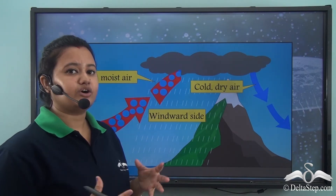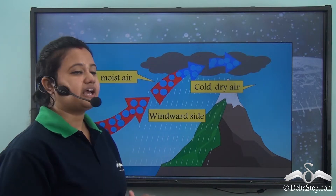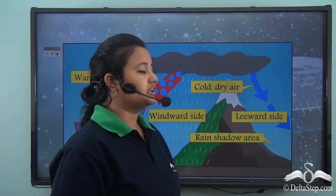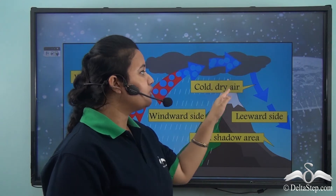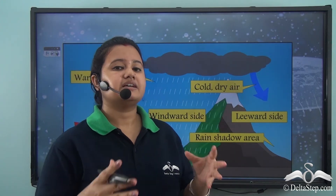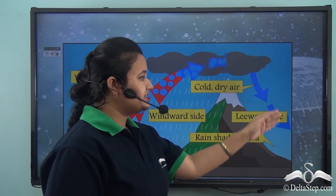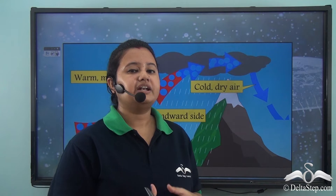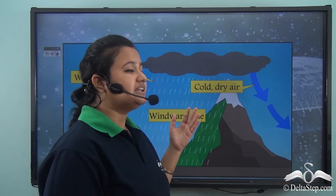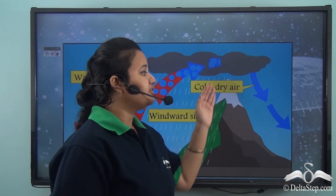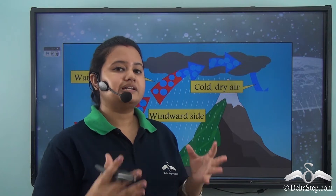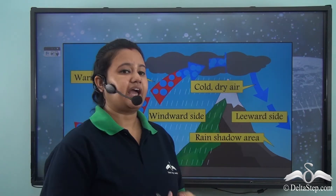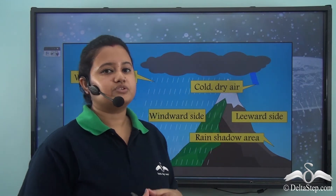The windward side is the side of the mountain that faces the wind. By the time the air descends over the other side of the mountain, it becomes cold and dry as its moisture content decreases. This opposite side is known as the leeward side, and here there is little or no rainfall — this region is known as the rain shadow region.